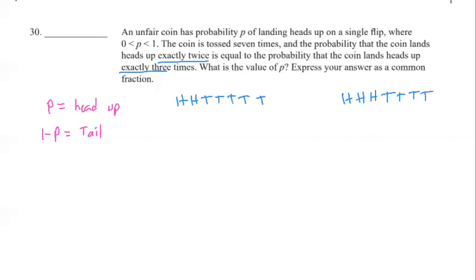But it doesn't have to be this order. I just said the first is head and the other is tail, but it could be the other way around. Like I can have tail, tail, head, tail, tail, head, and tail, whatever. So I need to know how many ways can I actually arrange these h's and t's. And that is something I will consider as well.